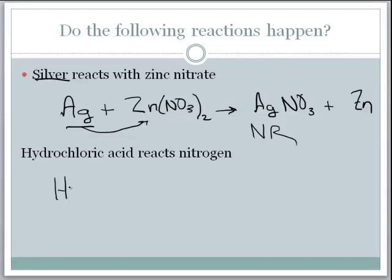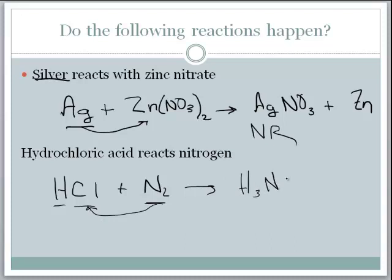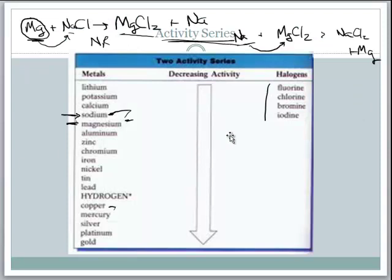The next one: hydrochloric acid reacting with N₂, so HCl reacts with N₂. We have a nonmetal as the single element. You'd look at the activity series to determine if nitrogen is higher than chlorine — the products would be H₃N plus Cl₂. However, nitrogen is not on our activity series for nonmetals, so we will simply skip that one.